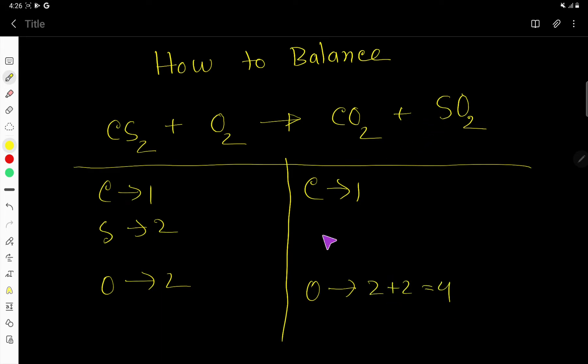Then here we have sulfur which is 1. So at first to balance this equation we have to balance the number of carbon, sulfur, and oxygen from both sides. So you have to target the atom.